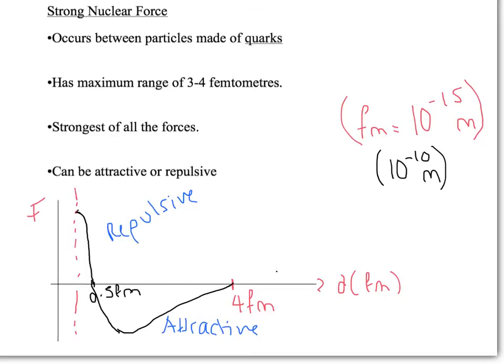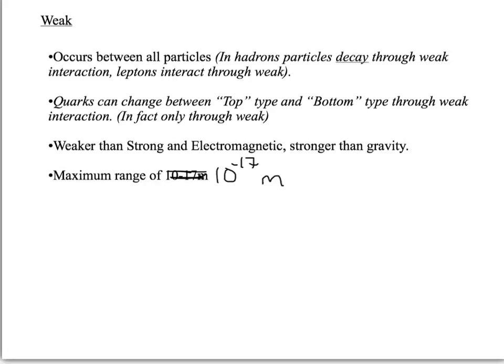Let's move on to the weak force. The weak force has a maximum range of 10 to the minus 17 meters. Its range is so tiny I'm not even going to bother to draw a graph. The weak is actually responsible for quite a few things. It's the weakest of all the forces apart from gravity - it's slightly stronger than gravity, but weaker than the strong and electromagnetic forces. It can occur between particles, all kinds of particles, but in different ways.